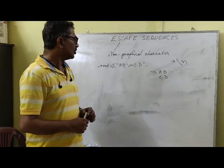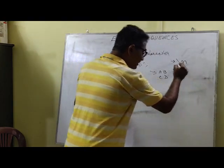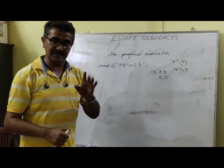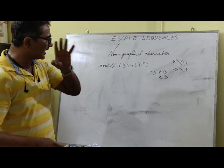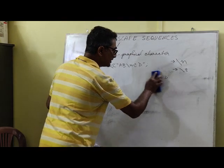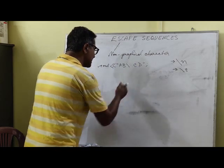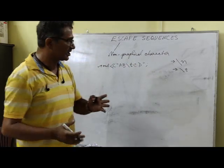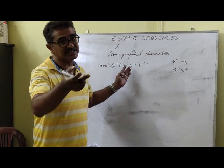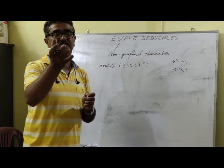The next most common escape sequence is the tab space, written as backslash T. Backslash T is used to display a tab space. It is a special character — just like backslash N, you should not expect it to print literally. If you write A B backslash T C D, it does not print A B backslash T C D; it controls spacing on the screen.